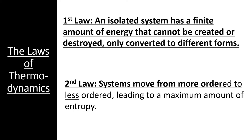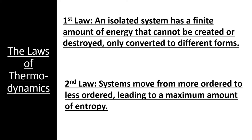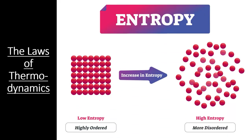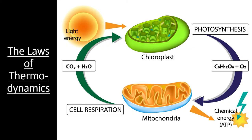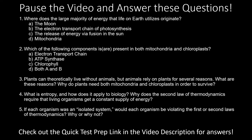The energy within the universe is constantly combining and dissociating into different forms, though none of it is lost. Now consider the second law of thermodynamics: systems move from more ordered to less ordered, leading to a maximum amount of entropy — a measure of chaos or lack of order. Since organisms constantly take small molecules and combine them into large molecules, they are technically decreasing entropy in their immediate environment. That is part of the reason why organisms need a constant flow of energy from the sun — they are constantly battling the breakdown of large molecules and trying to become as ordered as possible.